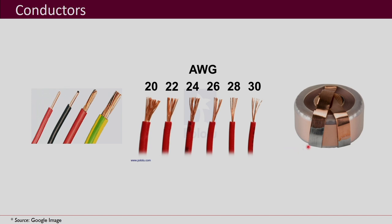A second type of conductor that may be used is what are called foils — copper foils. You can see that these are like strips of copper, flattened strips or foils, which are also used for magnetics design. These have certain advantages, but we will not go into the details of copper foils as this is just an introduction to magnetics design. We will take the simpler case of design using wires.